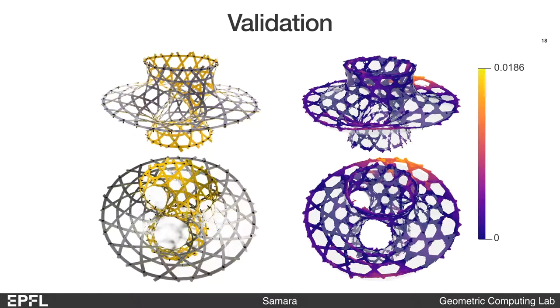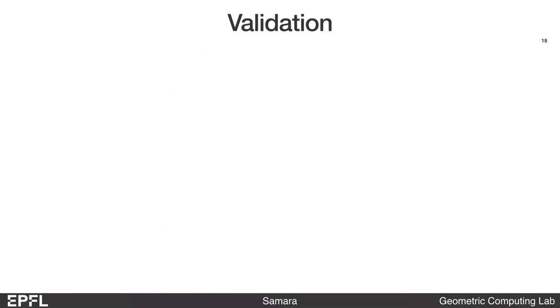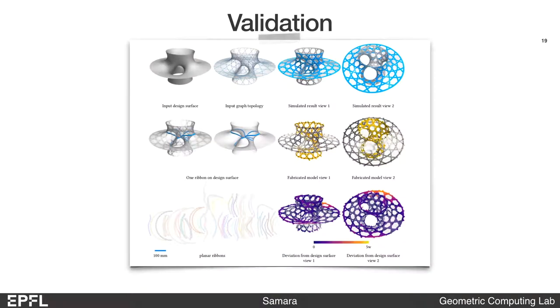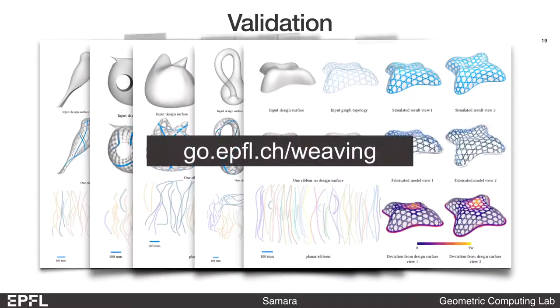In order to systematically evaluate the accuracy of our inverse design method, we scanned and reconstructed all the models we fabricated. For this model, the maximum deviation from the target surface is less than 2% of the bounding box diagonal. We provide the complete set of quantitative comparisons in the supplementary materials for all the models we fabricated.